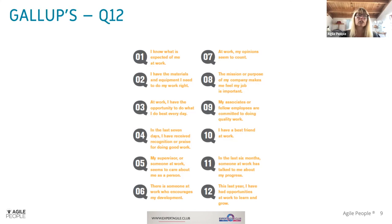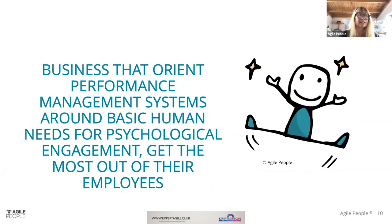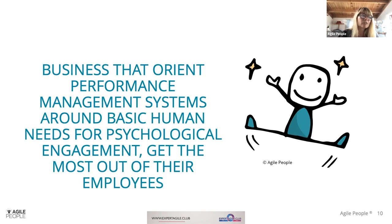Another question: 'The mission or purpose of my organization inspires me.' It's about leadership — how we see people and make it possible for them to perform within our organizational system. It's not much about salaries; it's more about being seen, being heard, and being cared for as a human being, because these are our basic needs. Gallup concludes that businesses that orient performance management systems around basic human needs for psychological engagement get the most out of their employees.